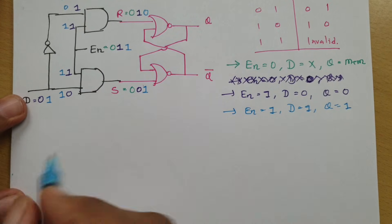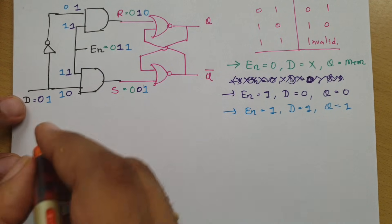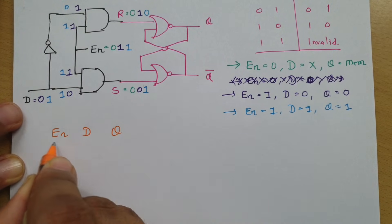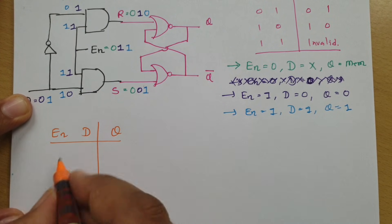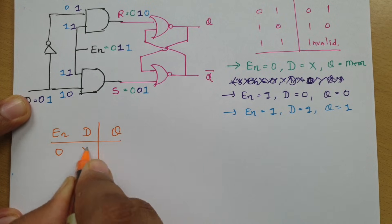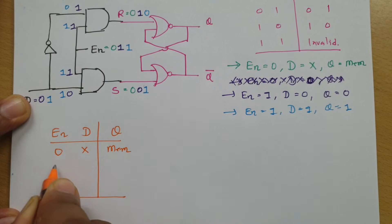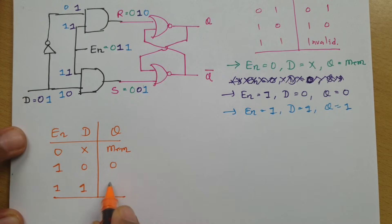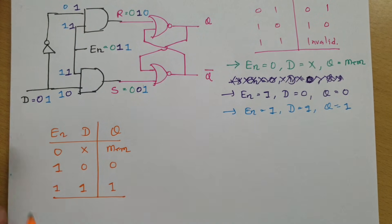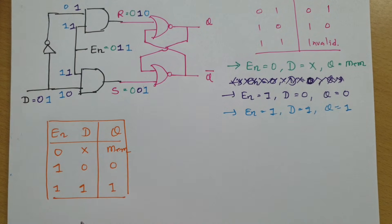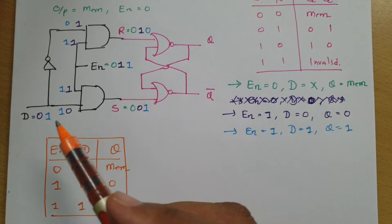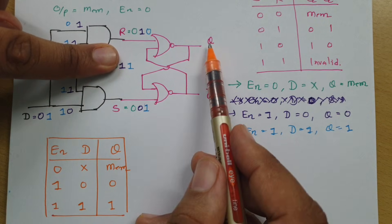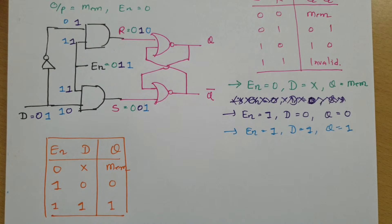So here we can make the truth table of D-Latch. We have the enable terminal, D input, and output Q. If enable is 0, then no matter what D is, output stays in memory state. When enable is 1, D can be 0 or 1 — if D is 0, output is 0, and if D is 1, output is 1. This is how the truth table works for D-Latch: enable=0 gives memory state, enable=1 gives Q equals D. I hope you have understood this video.